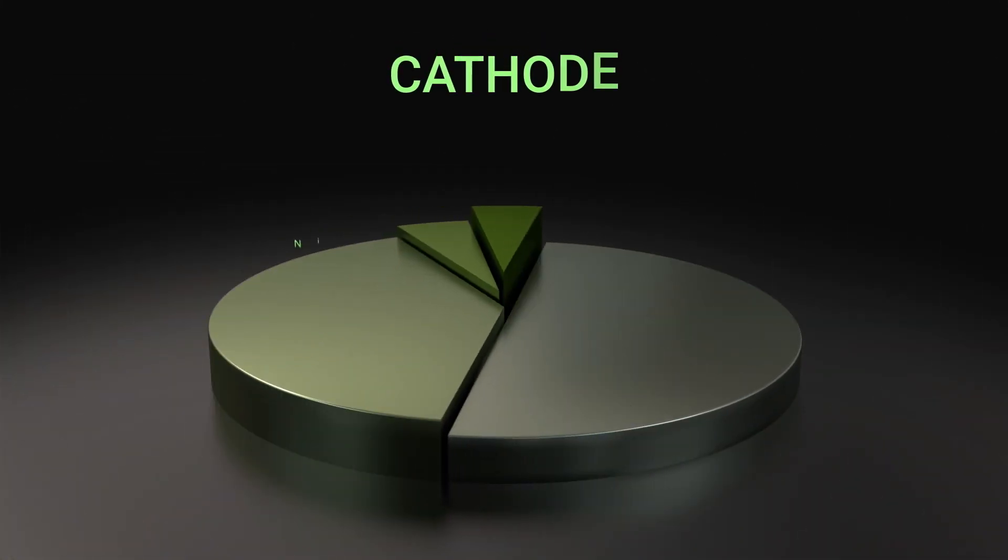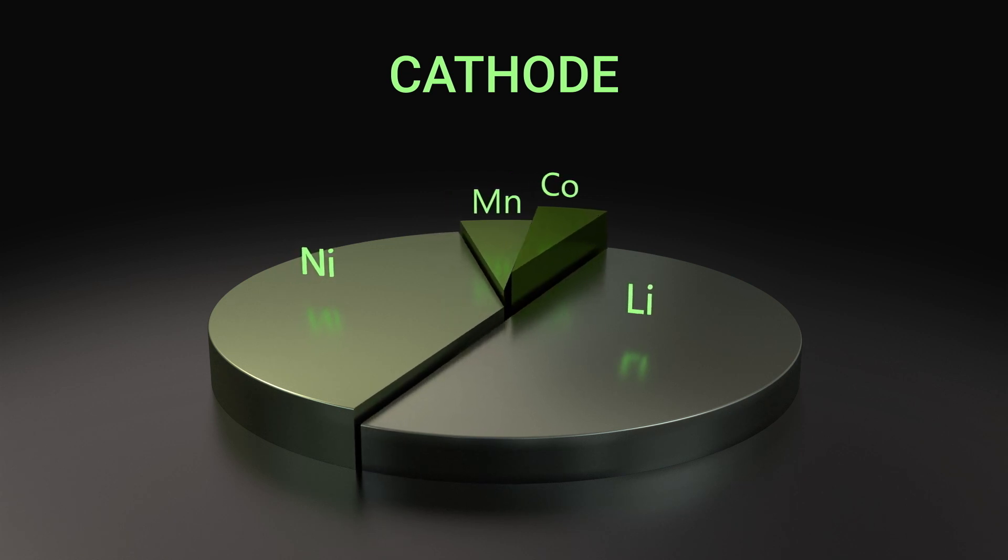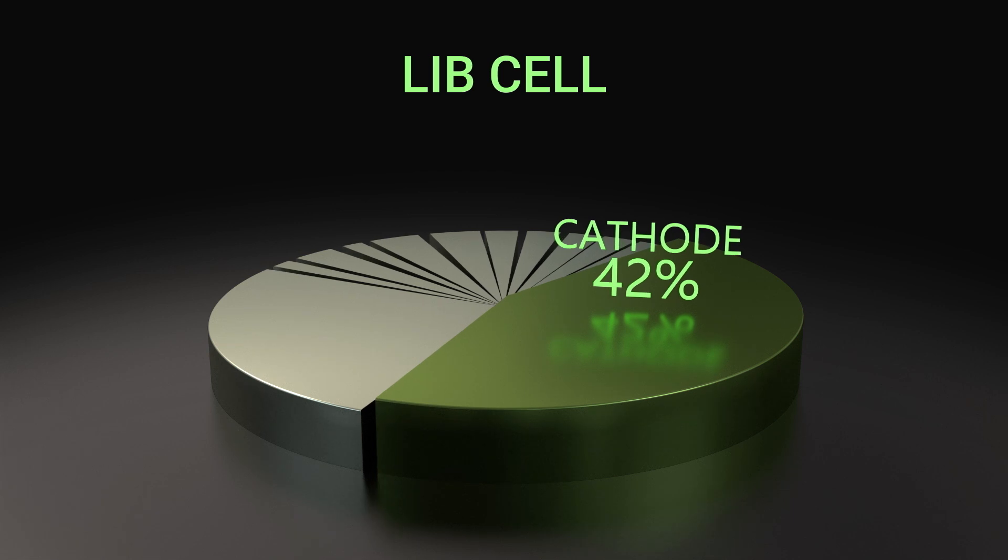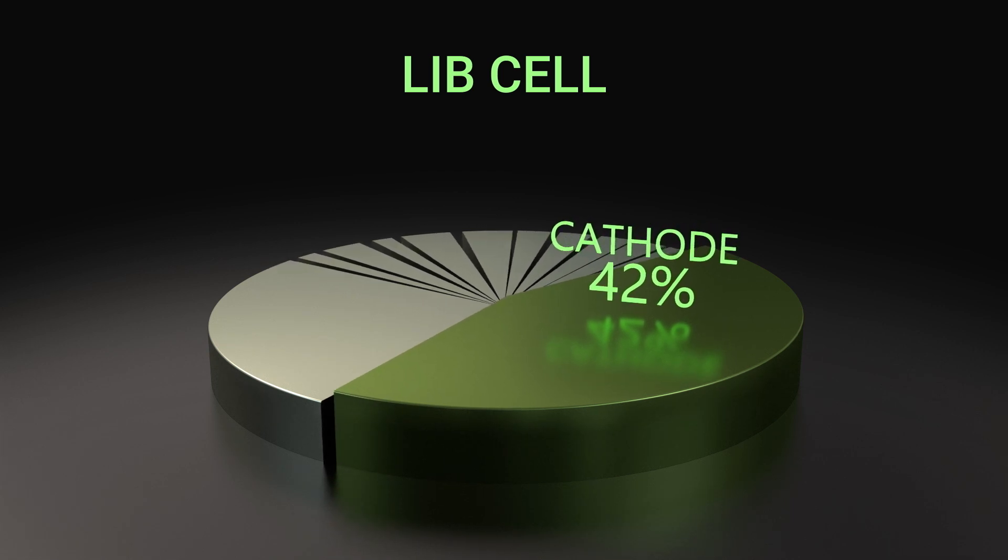Cathodes are made with lithium and metals such as nickel, manganese, and cobalt, making it the most expensive component and complex supply chain in today's lithium-ion battery.